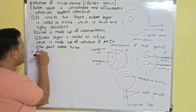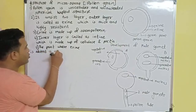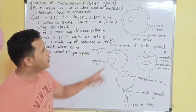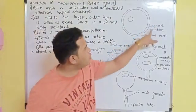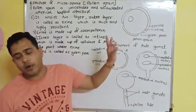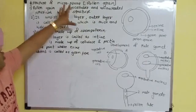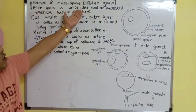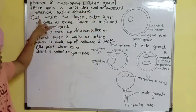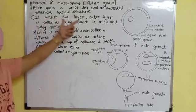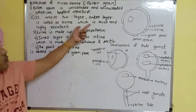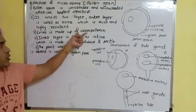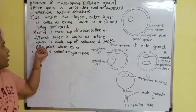The point where the exine is absent is called the germ pore. The inner layer is called the intine. Intine is the inner layer which is made up of cellulose and pectin. So the structure of the microspore or pollen grain: it is unicellular, uninucleated, spherical, haploid, with outer layer exine made of sporopollenin and inner layer intine made of cellulose and pectin.